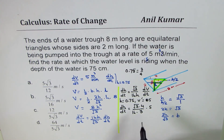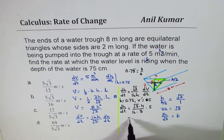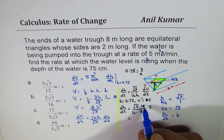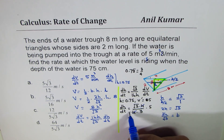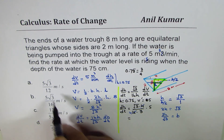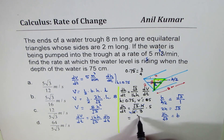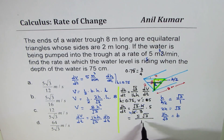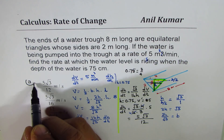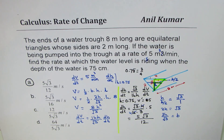So that is our expression and we can simplify it. The 4 cancels giving us 5√3 in the numerator and 4 times 3, which is 12, in the denominator. We get 5√3 over 12 meters per minute, so option A is the right answer. That is how you can solve this question and match the answer.